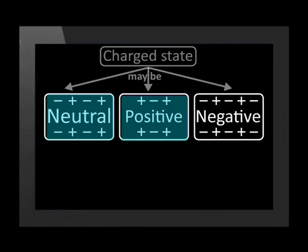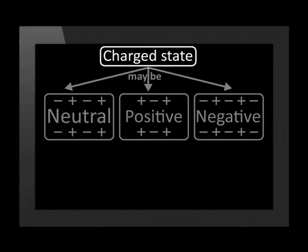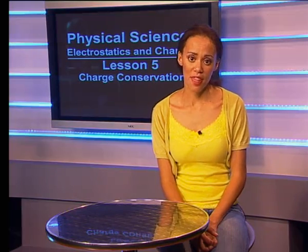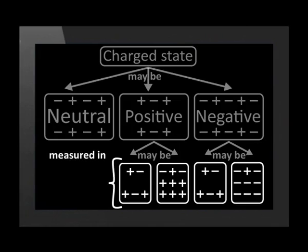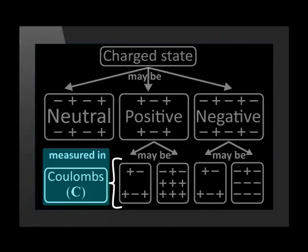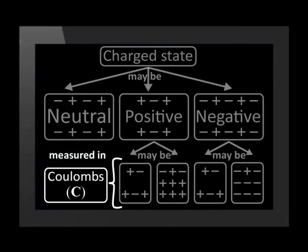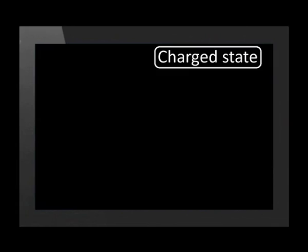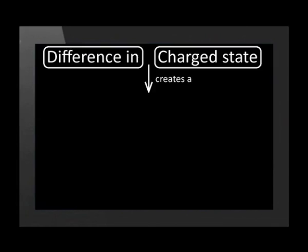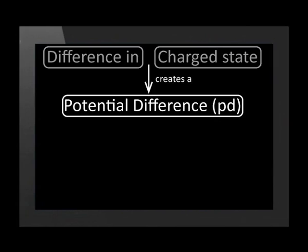We discussed that neutral, positive, and negatively charged objects have different charged states. We also learned that the extent of charging affects charged states. For example, a slightly positively charged object has a different charged state to a very positively charged object. The extent of charge is measured in coulombs, shortened as the symbol C. Two objects which do not have the same charged state have a difference in charged state, which creates a potential difference, also called a PD, between them, and this potential difference may cause a discharge.